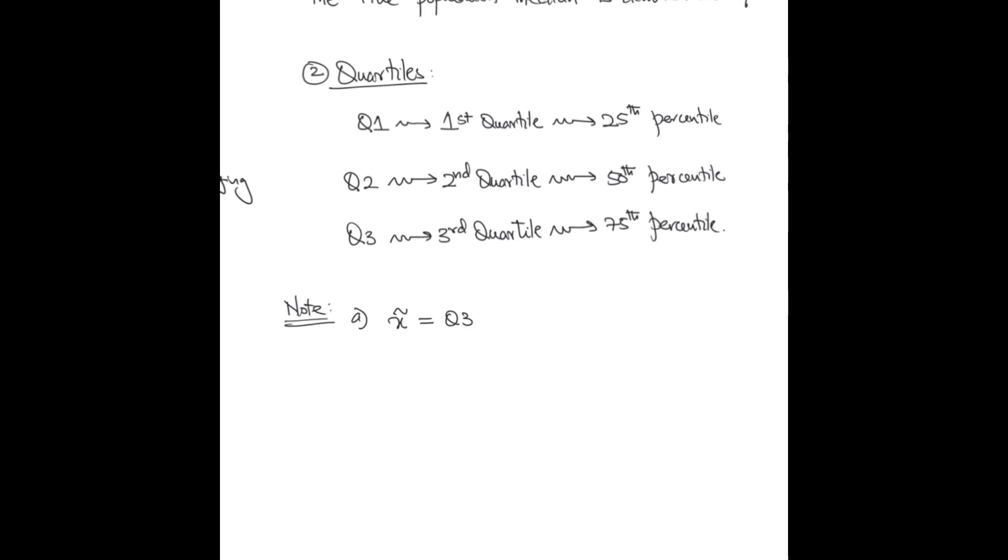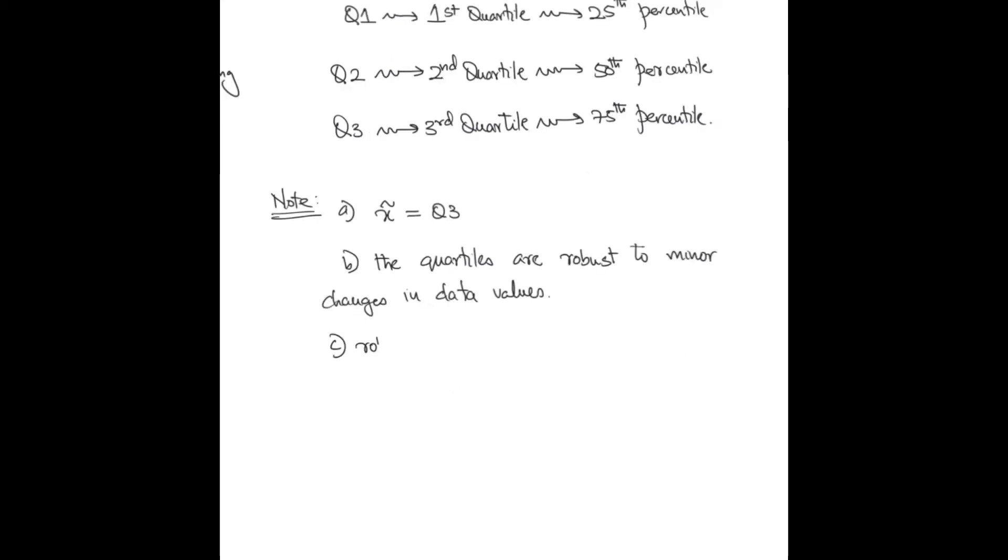If the sample median required us to look at the midpoint in the data set, the quartiles divide the data set into four parts. The first quartile is the 25th percentile, the second quartile is the 50th percentile which is the median, and the third quartile is the 75th percentile. The quartiles are robust to minor changes in data values and robust to outliers. While they are robust, they do have poor arithmetic properties.